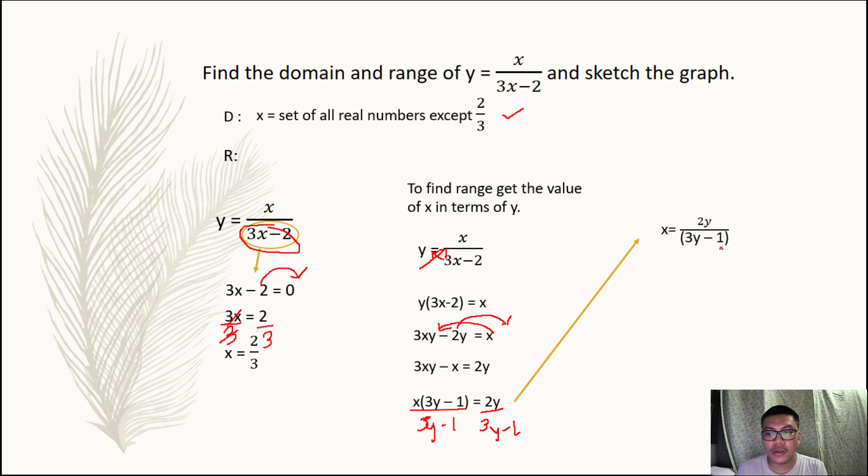So now we're going to solve for the value of x that will give us a zero denominator. That is why we're going to equate 3y minus 1 to zero. Now to solve for our y, move the negative 1 to the right.